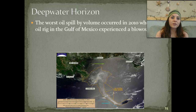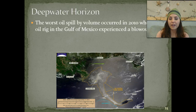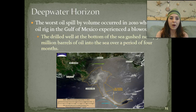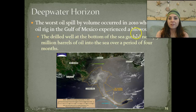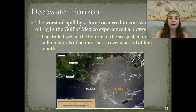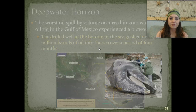The worst oil spill by volume occurred in 2010 when an oil rig in the Gulf of Mexico experienced a blowout. The drilled well was at the bottom of the sea and gushed nearly five million barrels of oil into the sea over a period of four months before we could stop it.